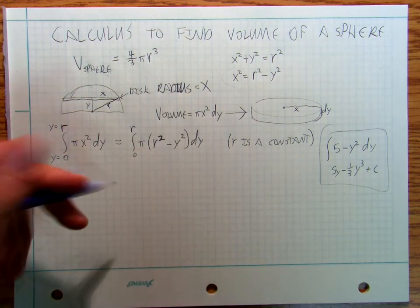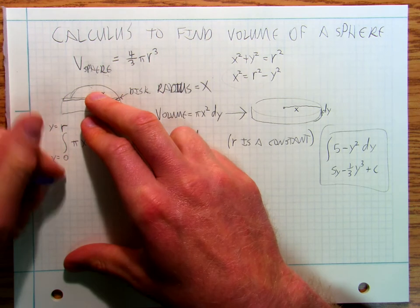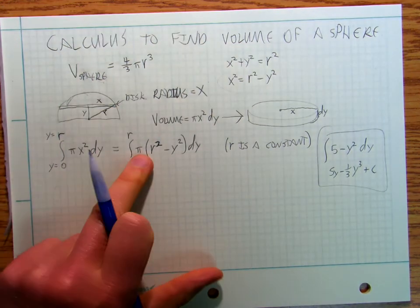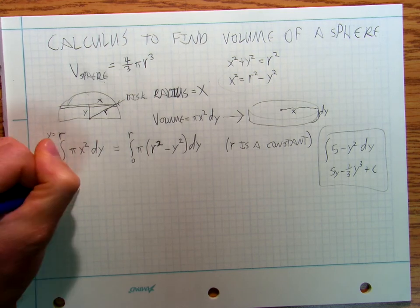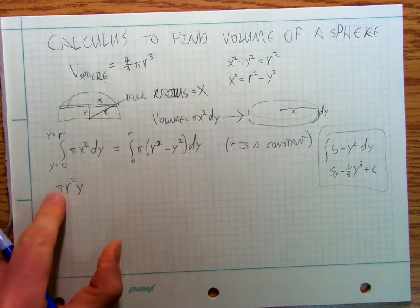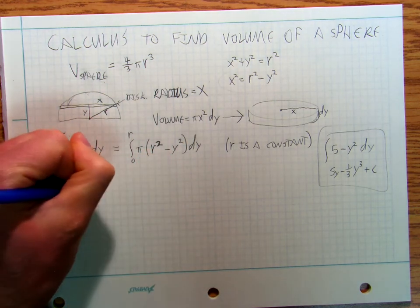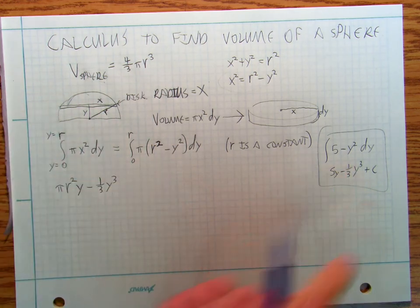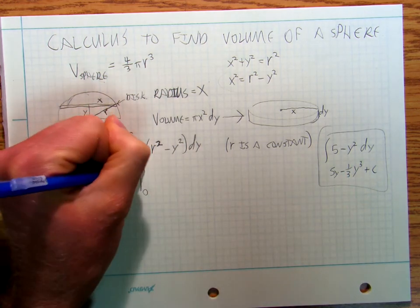So over here, I'm going to get the integral, well, I'm going to take the integral so I don't need the integral sign anymore. I'm going to get pi r squared y, so if that's my five, the integral of five is five y, minus one third y cubed, that's the same, plus c, evaluated at zero and r.